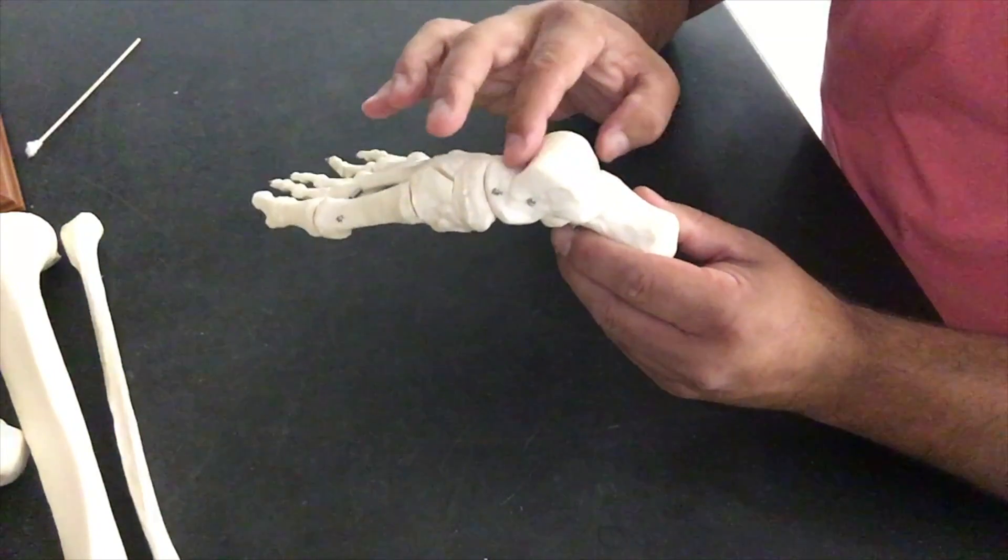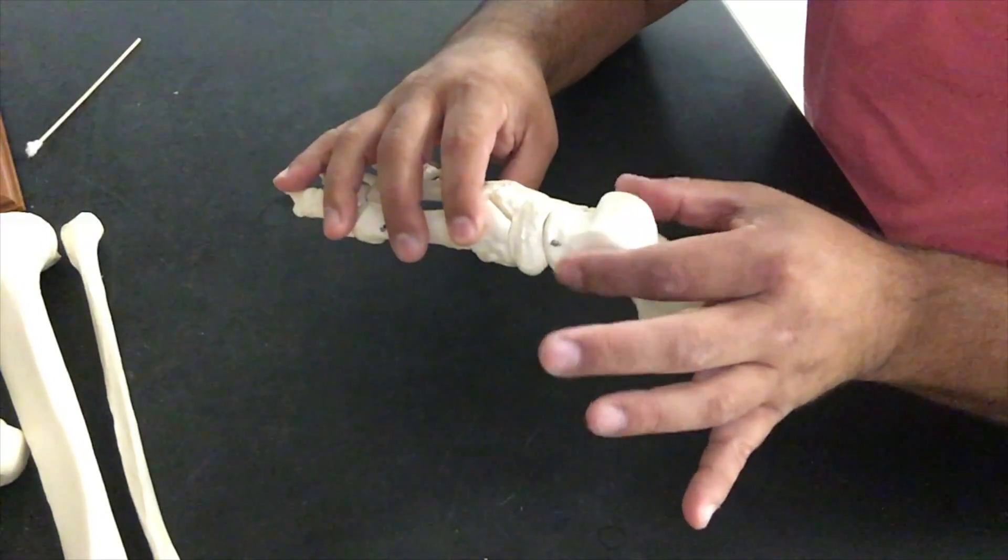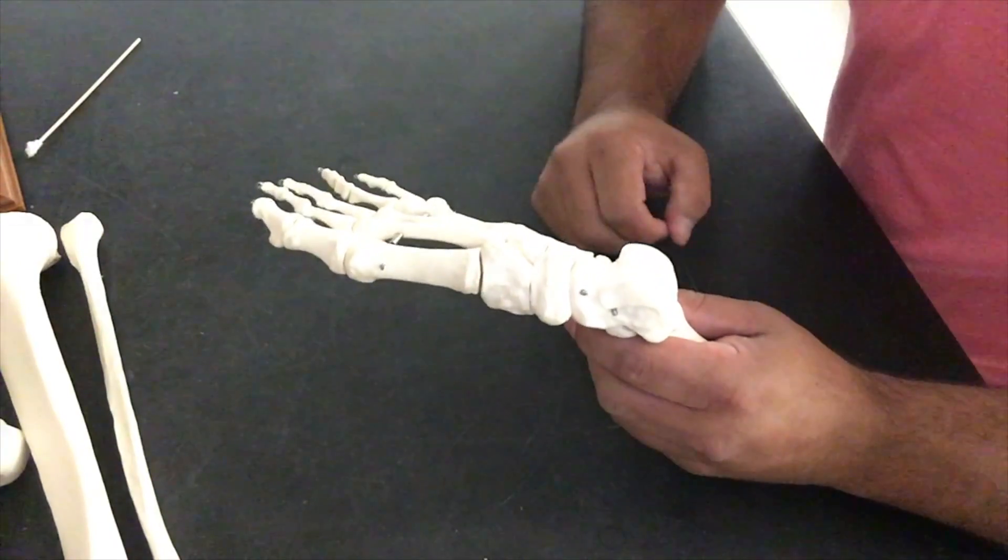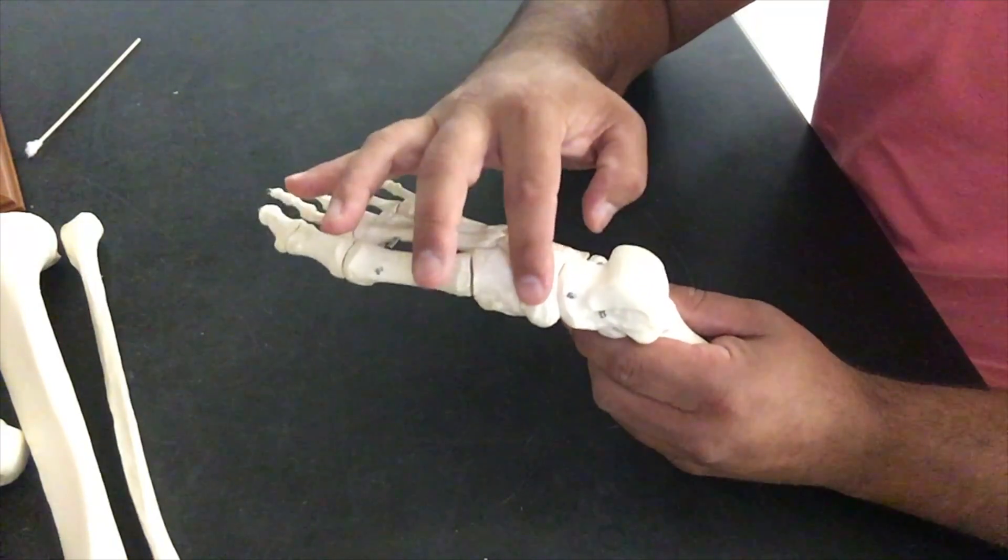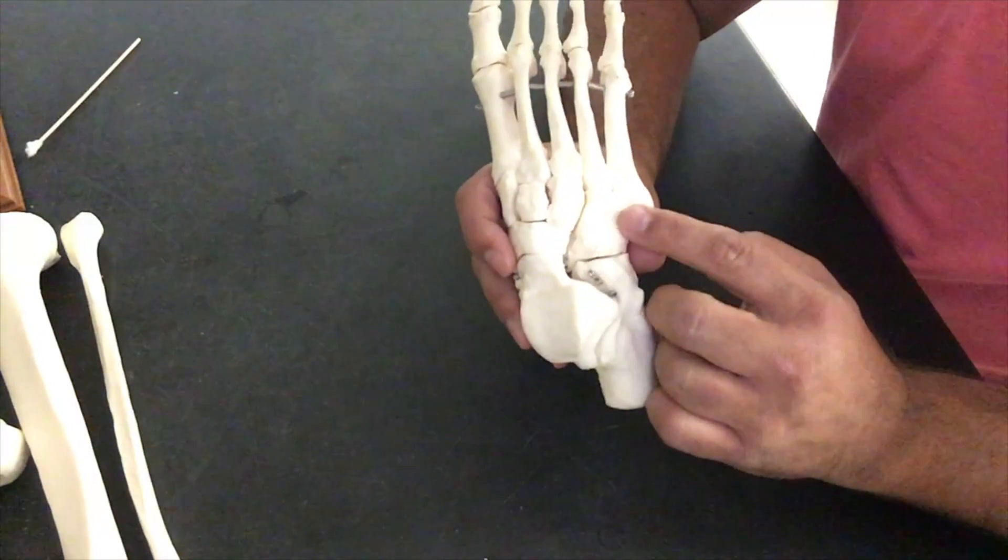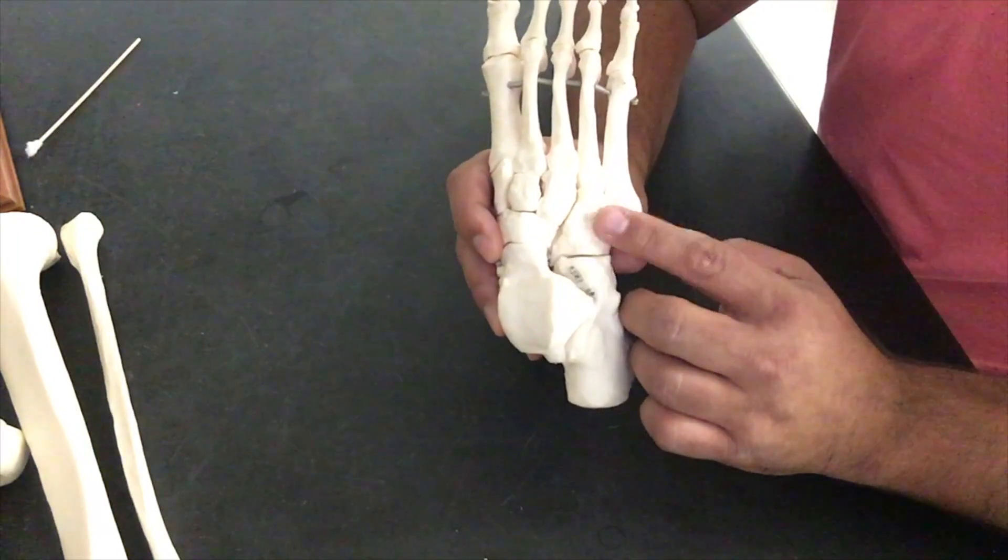This nice rounded portion is where those malleoli, those two lateral and medial malleoli are going to grab onto. This is the talus. We have a navicular right here. And on the outermost, lateral most aspect, we're going to have our cuboid.